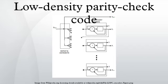LDPC codes functionally are defined by a sparse parity check matrix. This sparse matrix is often randomly generated, subject to the sparsity constraints. These codes were first designed by Robert Gallagher in 1962.